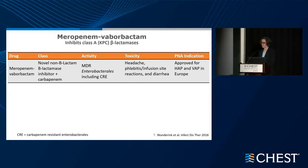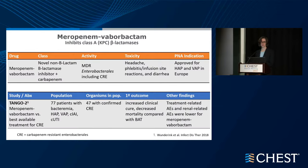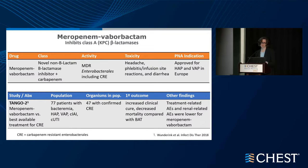Meropenem-vaborbactam is a novel non-beta-lactam plus beta-lactamase inhibitor combined with the known carbapenem, active against multidrug-resistant Enterobacterales including carbapenem-resistant Enterobacterales. It is approved for HAP and VAP in Europe but not in the U.S., which is why it was not chosen for the case question. The TANGO 2 study compared meropenem-vaborbactam to best available treatment for carbapenem-resistant Enterobacterales — a small study of 47 patients with confirmed carbapenem-resistant Enterobacterales. Overall, they found increased clinical cure and decreased mortality compared with best available treatment, with lower treatment-related and renal-related adverse events.